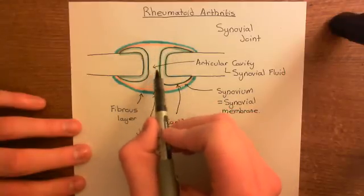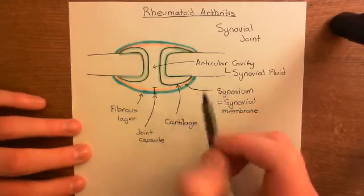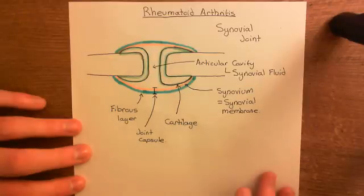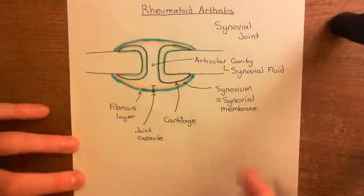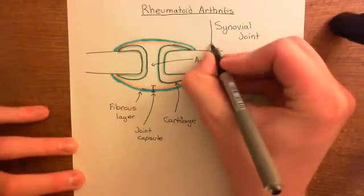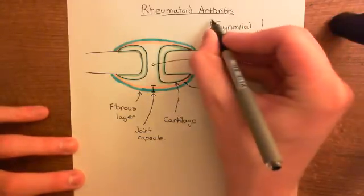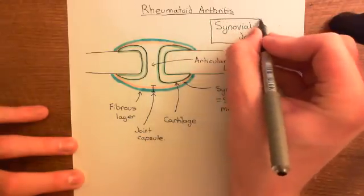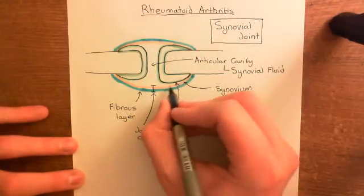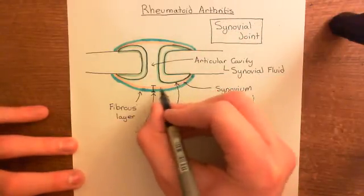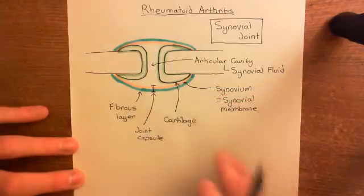Inside the joint capsule, you have the articular cavity, which is full of synovial fluid. So that's the structure of a synovial joint. Rheumatoid arthritis is going to be inflammation of the synovial membrane, so let's have a look at the structure of the synovial membrane in a little bit more detail.